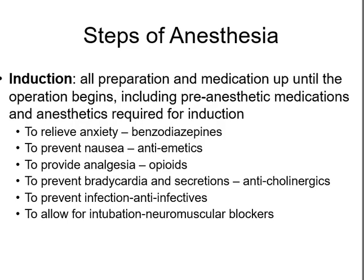They may give you a benzodiazepine if you're anxious. Opioid pain relievers can cause nausea, so they may give you an antiemetic to control nausea and vomiting. They may give you an opioid as a CNS depressant that also provides pain relief post-surgery. To prevent the heart slowing and to decrease secretions, they'll give you an anticholinergic. To prevent infection if concerned — such as during gut surgery — they might give you an antibiotic. They may also give you something to paralyze your muscles to allow placement of an intubation tube.